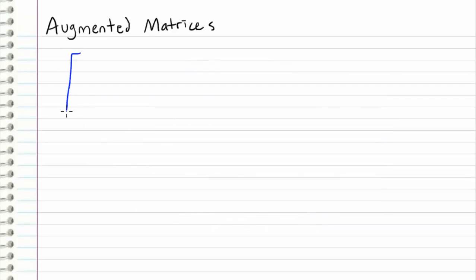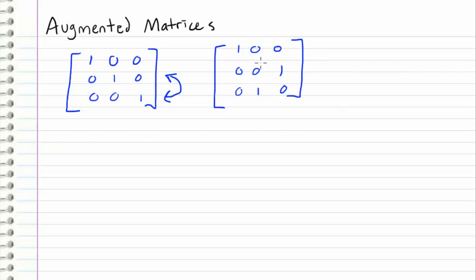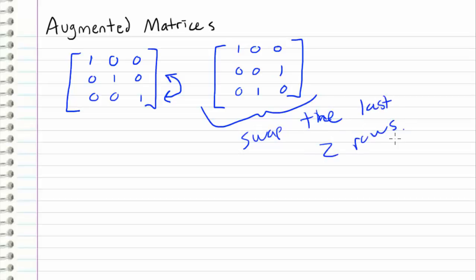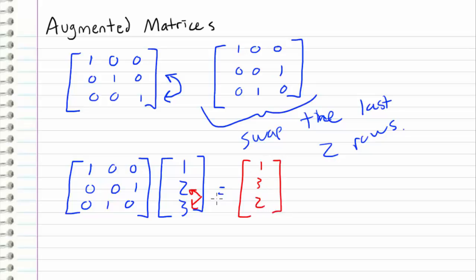Now let's take a look at another example. Take the identity matrix [1, 0, 0 / 0, 1, 0 / 0, 0, 1] and do a row swap — swap the bottom two rows. What I get is [1, 0, 0 / 0, 0, 1 / 0, 1, 0]. So now this matrix should swap the last two rows of anything I multiply it by. If I take this transformed matrix and multiply it by the vector [1, 2, 3], I should get a vector with the last two positions swapped. Carrying it out: the first row gives one, the second row gives three, and the third row gives two. Yes, this is indeed the case. The reason this happens is because of the operation we applied to our identity matrix.